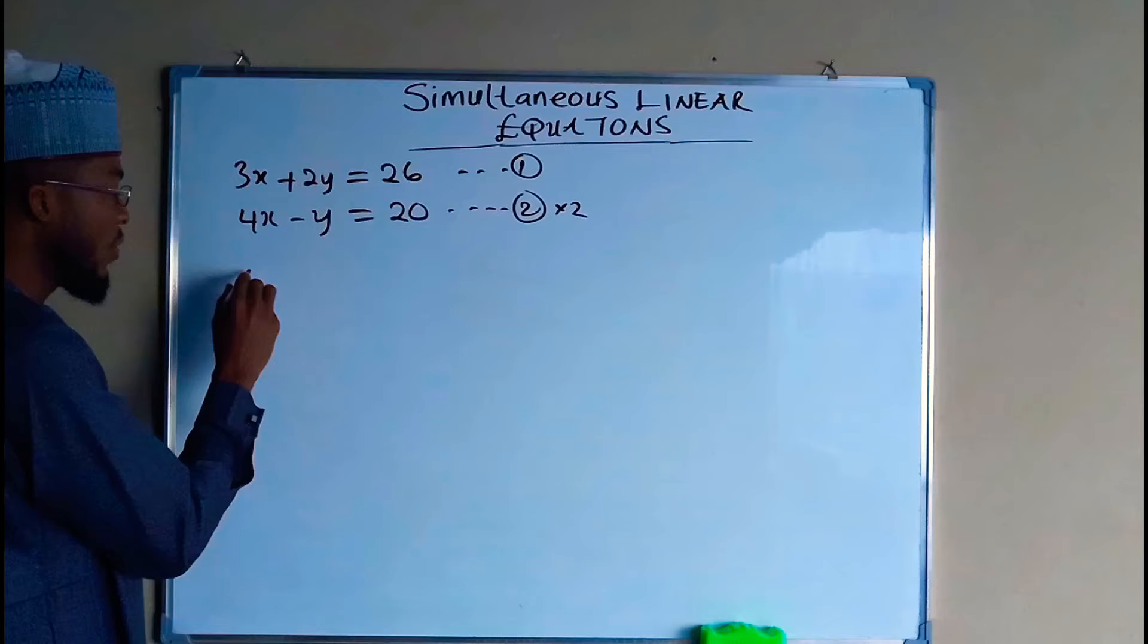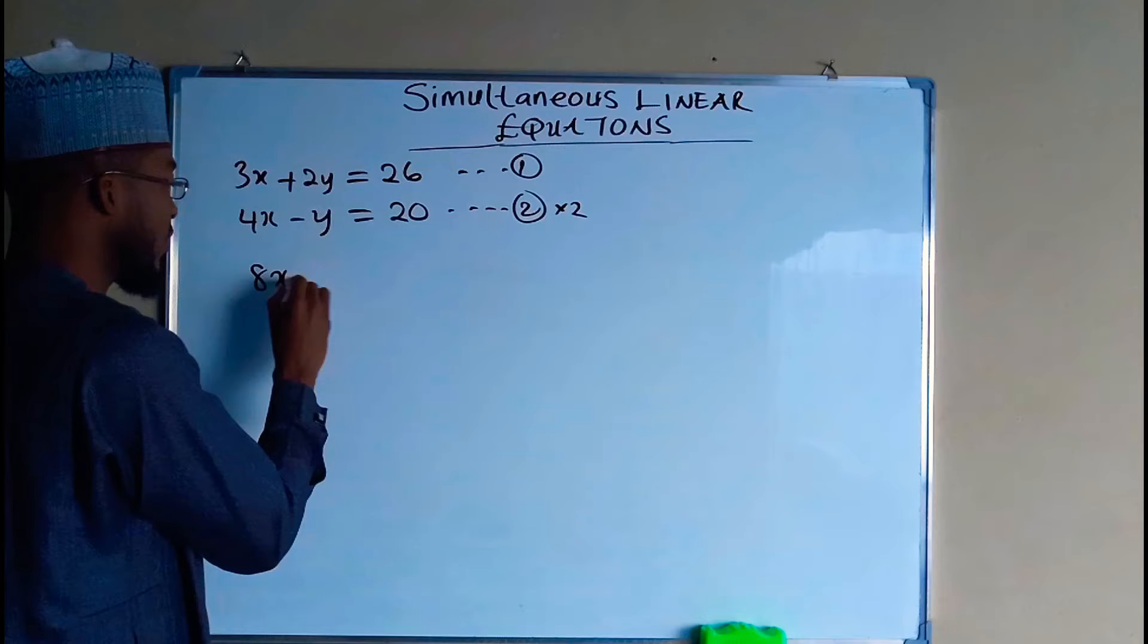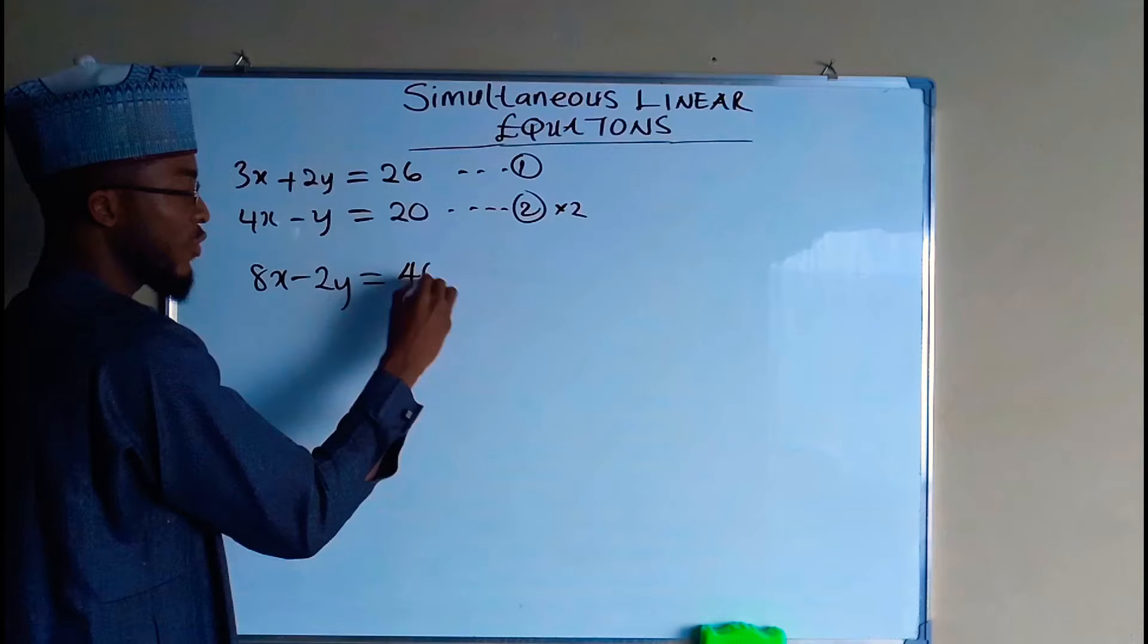The second term is negative y times 2 is going to give us negative 2y, and this is equal to 20 times 2 which is equal to 40.